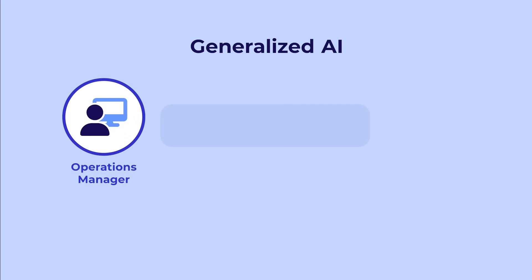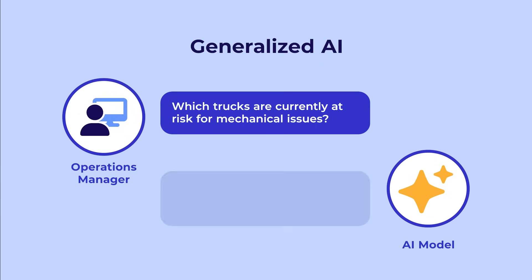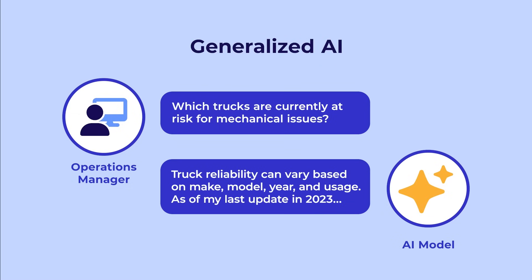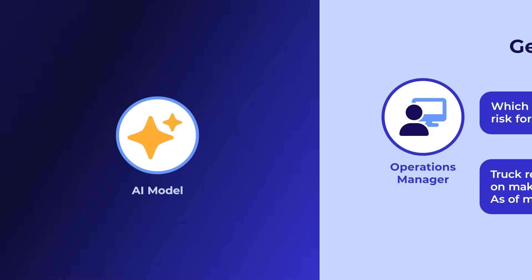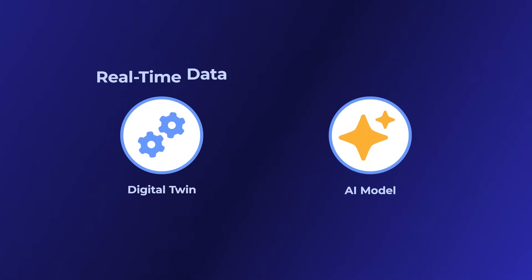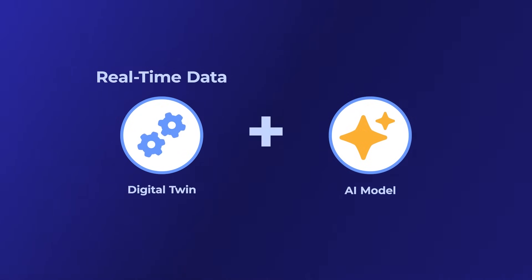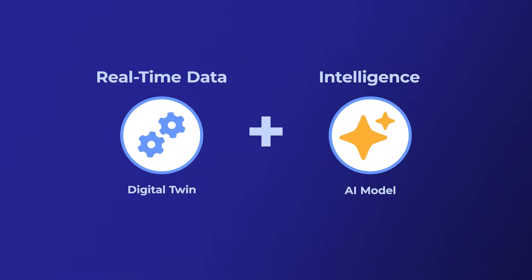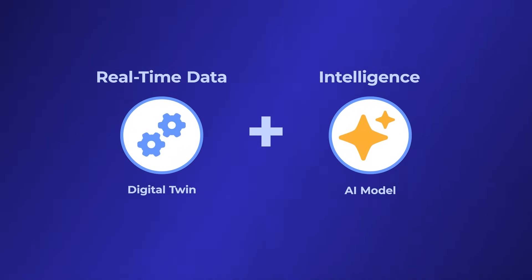Alternatively, a generalized AI model can provide instant responses, but without any details about your fleet, its answers may be inaccurate or misleading. The optimal solution combines real-time data from digital twins with the intelligence of a large language model.